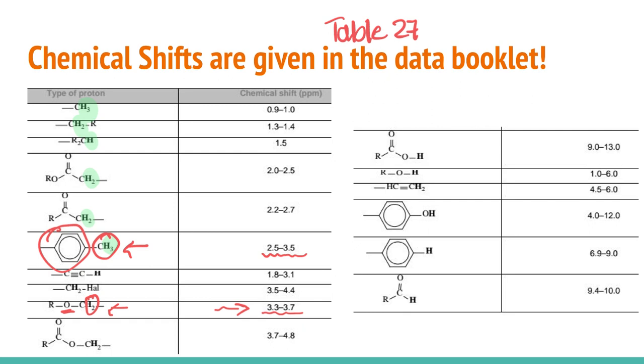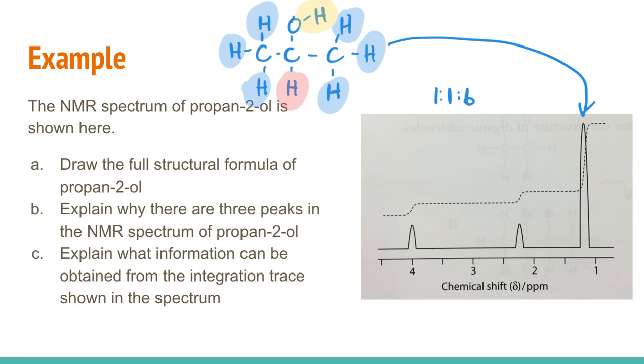The other one we need to look at is the proton attached directly to a hydroxyl group and that's in the range of one to six. So if we go back to our example here, that one to six range is huge.